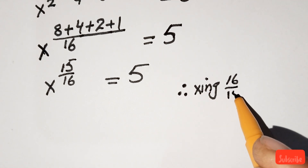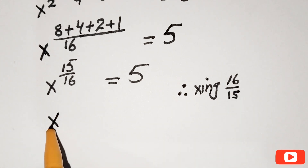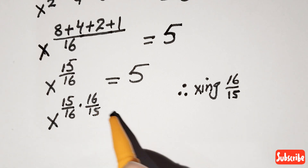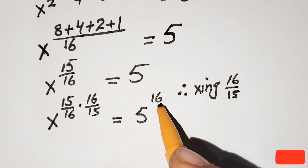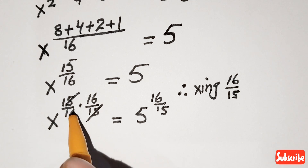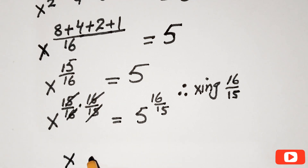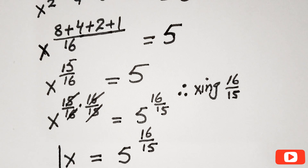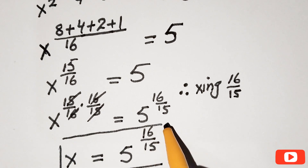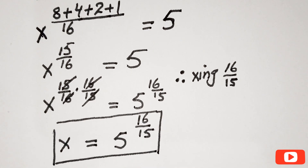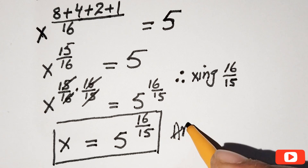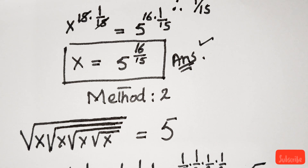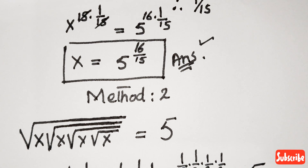Multiplying the power of x by 16 over 15, we get x to the power 1, which is just x, equals 5 raised to the power 16 over 15. Canceling 15 and 16, x equals 5 to the power 16 over 15. This is the same answer as from Method 1, confirming both methods give the same result. Hope you enjoyed the video — thanks for watching, goodbye, take care!